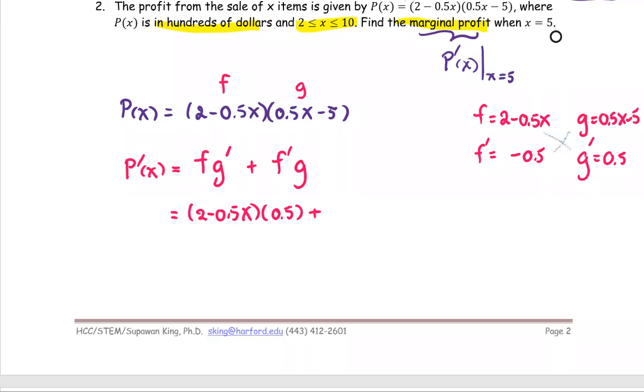Added by f prime or negative 0.5 multiplied by g, which is 0.5x minus 5. Then we simplify as much as we can. We have 0.5 and 0.5 as a common factor. I'm going to pull it out from those two terms.